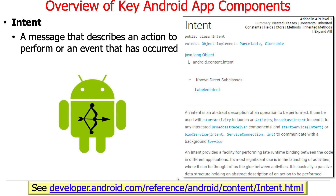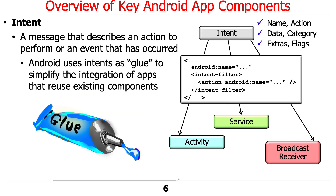Probably the most fundamental abstraction is something called the intent. An intent is basically just a message or an event that describes either an action that should be performed or an event that's already occurred. Android uses intents as glue to simplify the integration of apps that reuse existing components.